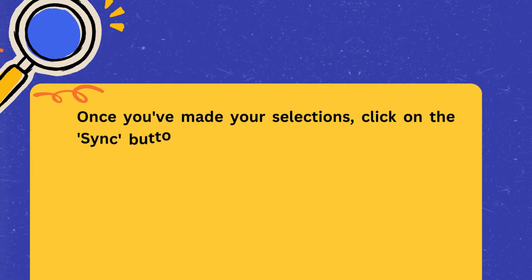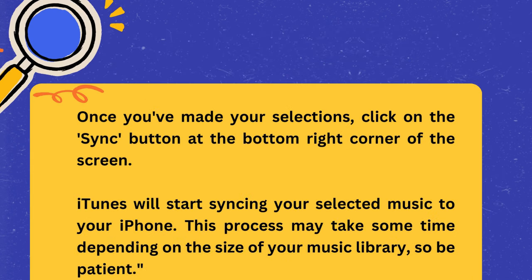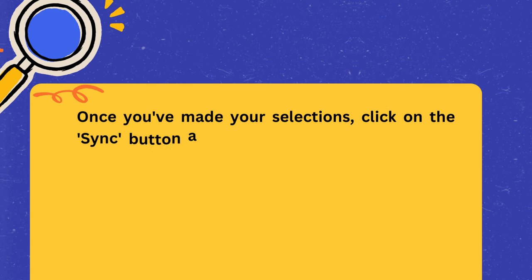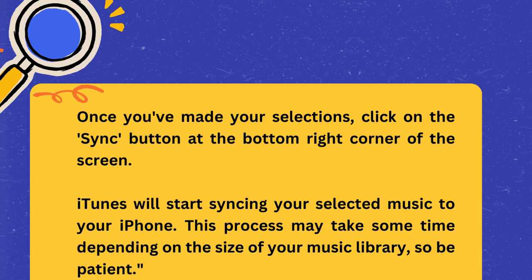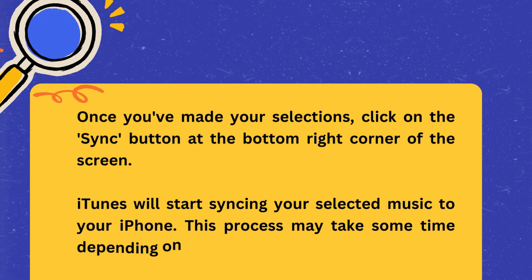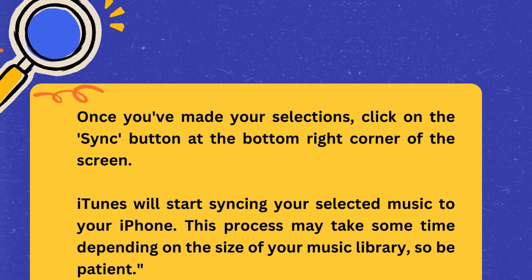Once you've made your selections, click on the Sync button at the bottom right corner of the screen. iTunes will start syncing your selected music to your iPhone. This process may take some time depending on the size of your music library, so be patient.